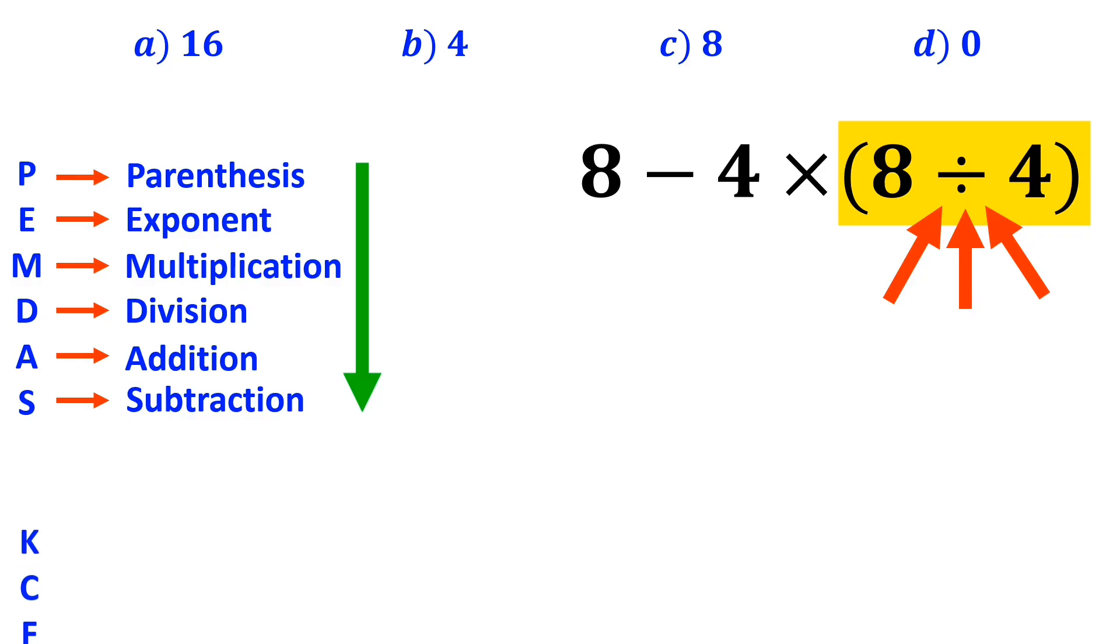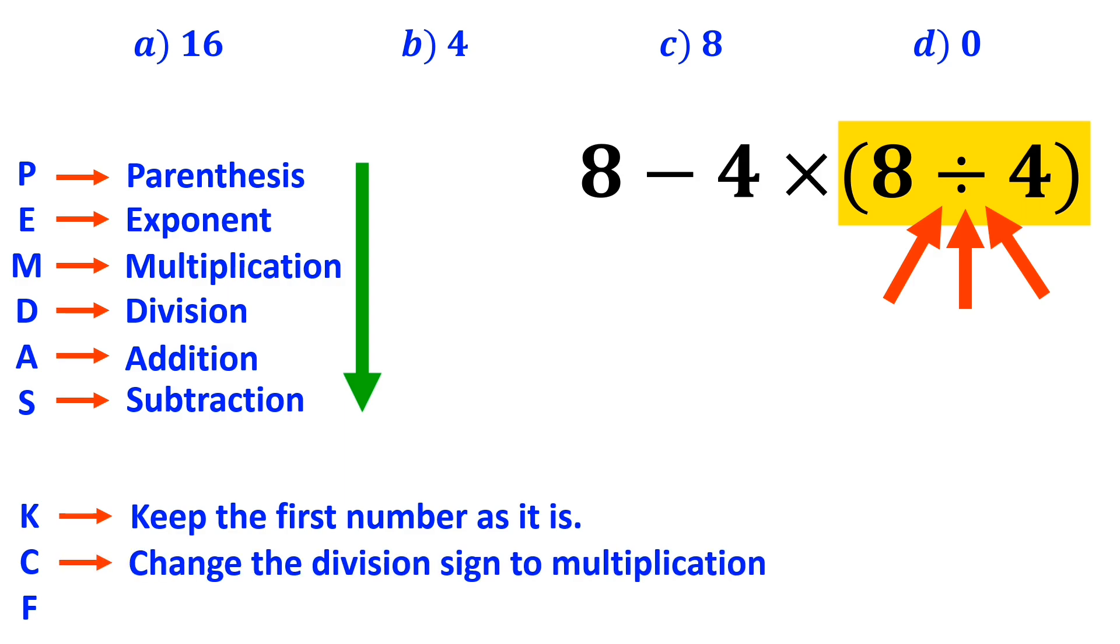In this rule, K stands for keep the first number as it is, C stands for change the division sign to multiplication, and F stands for flip the second number and write it as a fraction.